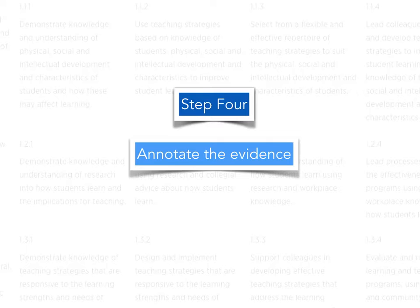In one of the previous videos, I explained a good strategy: place post-it notes on the actual points on the evidence and write on the post-it notes exactly which descriptor is being met, along with a brief overview of how it's being met. If you've done that, then the annotating part at this point becomes very easy.